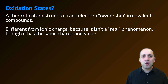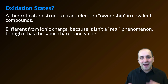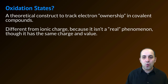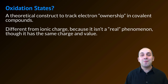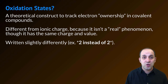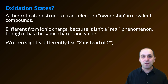Oxidation states are different from ionic charge because ionic charge is actually a real thing — ions have real charges. In a covalent compound, atoms are assigned oxidation states, but those don't actually equate to anything real. Even so, oxidation states and charges are very similar. For instance, an atom that does have an ionic charge has an oxidation state equal to that ionic charge. To keep them separate, we write oxidation states with the sign first and then the number, instead of the number and then the sign like we do for ionic charges.